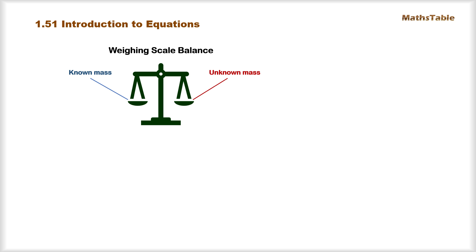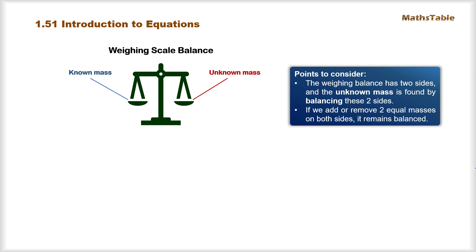When the two sides are balanced, we say that the unknown mass is equal to the total known masses placed on the other side. So basically our target when using the weighing scale balance is to balance the two sides — our problem is solved when the two sides are balanced. Also, if it is already balanced and we add or remove equal masses on both sides, then it still remains balanced.